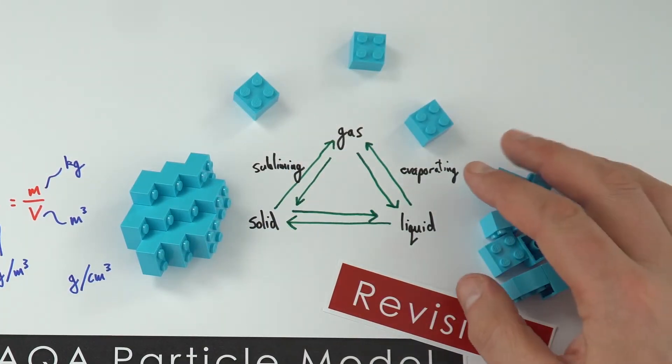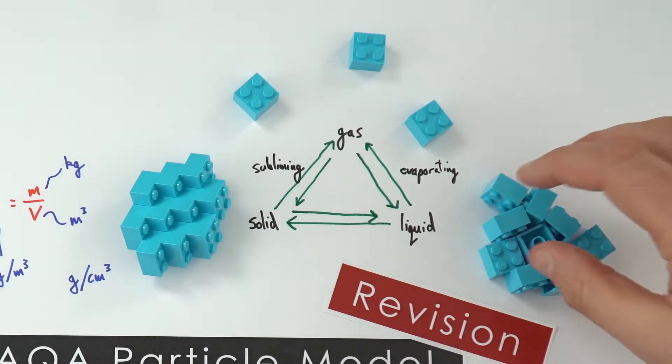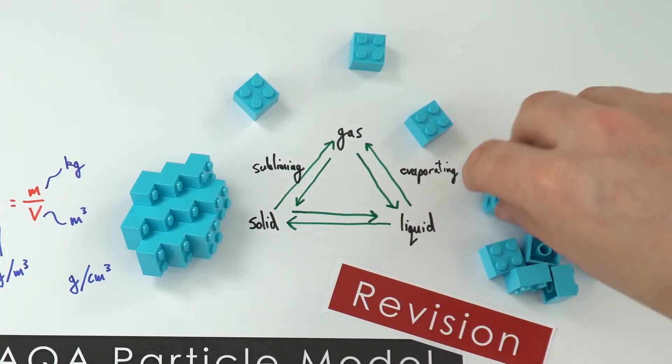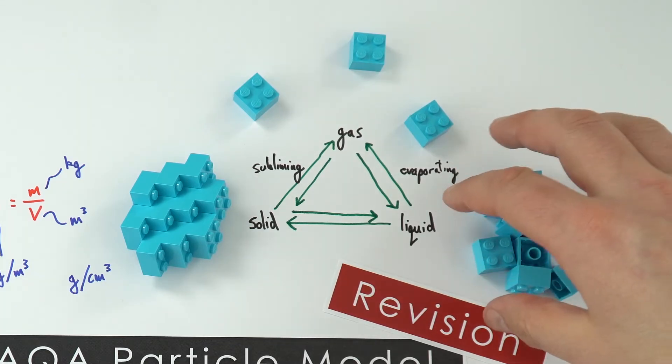The key thing to remember is when we move from one state to another, there's no chemical reactions happening—it's just a physical change, which means it can be reversed, and they can go back to the state they were in before.